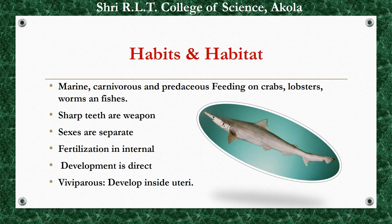Scoliodon is a fast swimmer and catches hold of prey by means of sharp teeth, which it uses as a weapon. The sexes are separate, and male and female individuals can be identified by external characters. Fertilization is internal, taking place inside the body. The development is direct, without any larval stage. Scoliodon is viviparous — it gives birth to living young ones that develop inside the uterus.